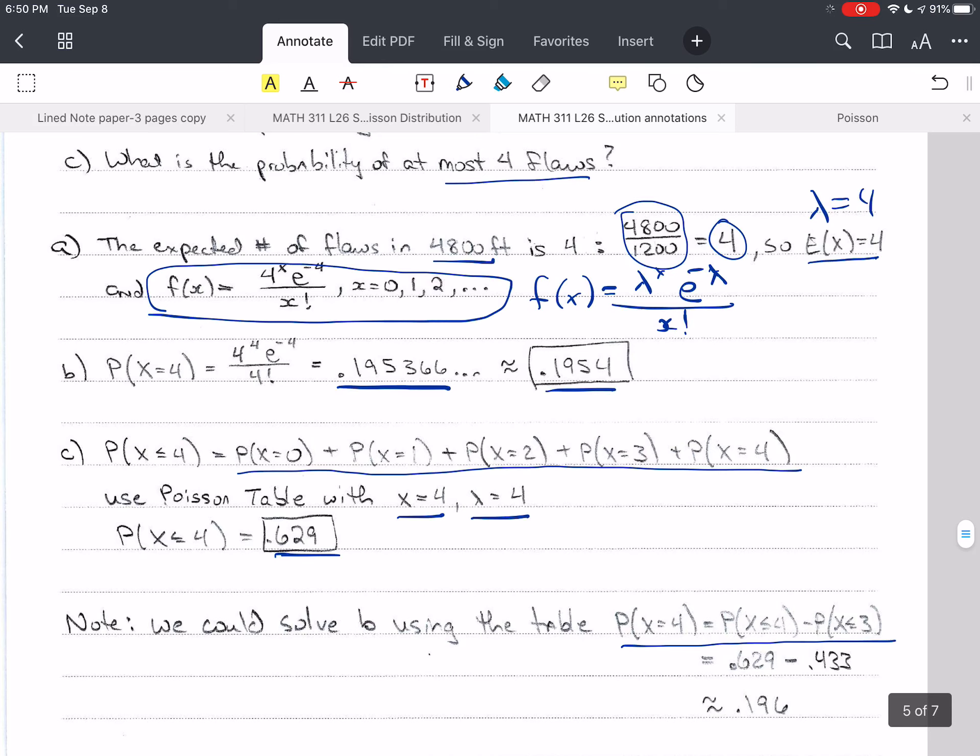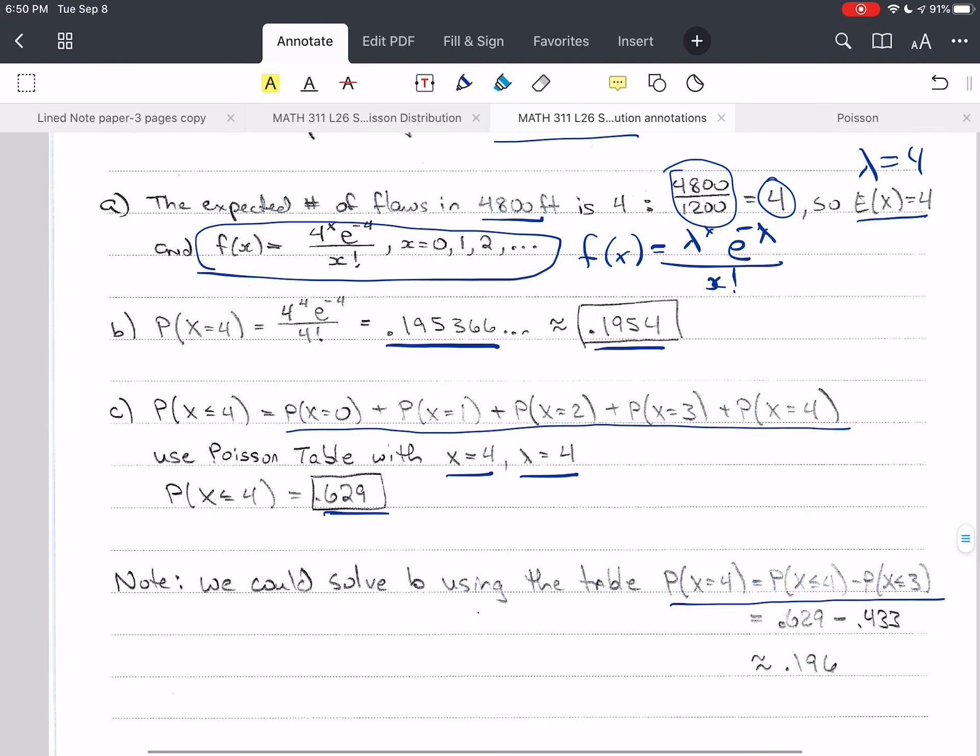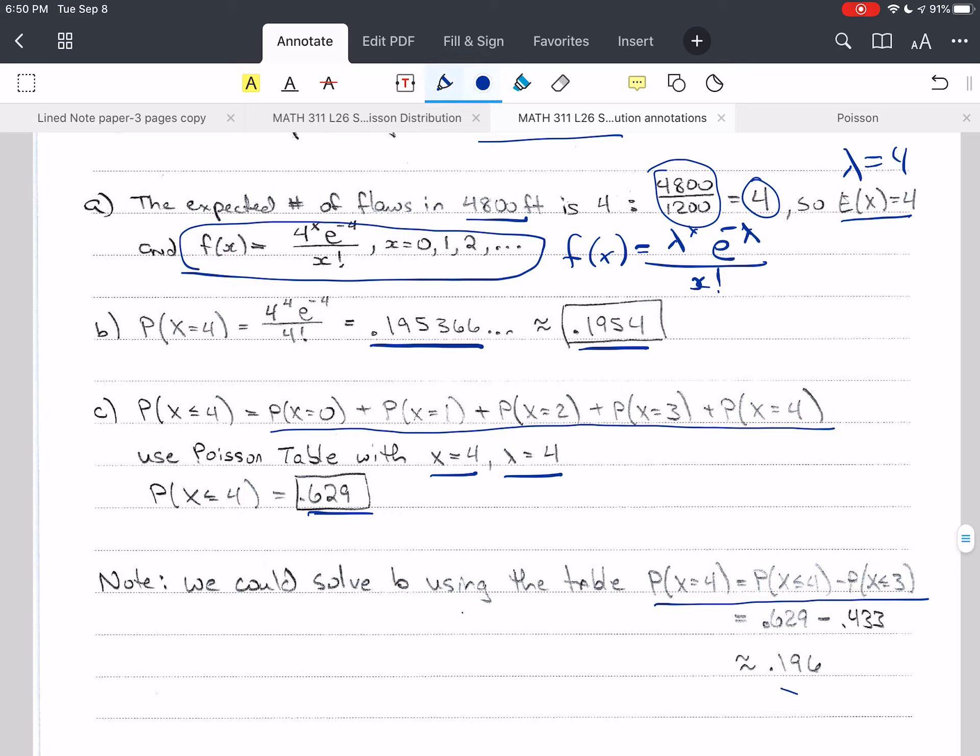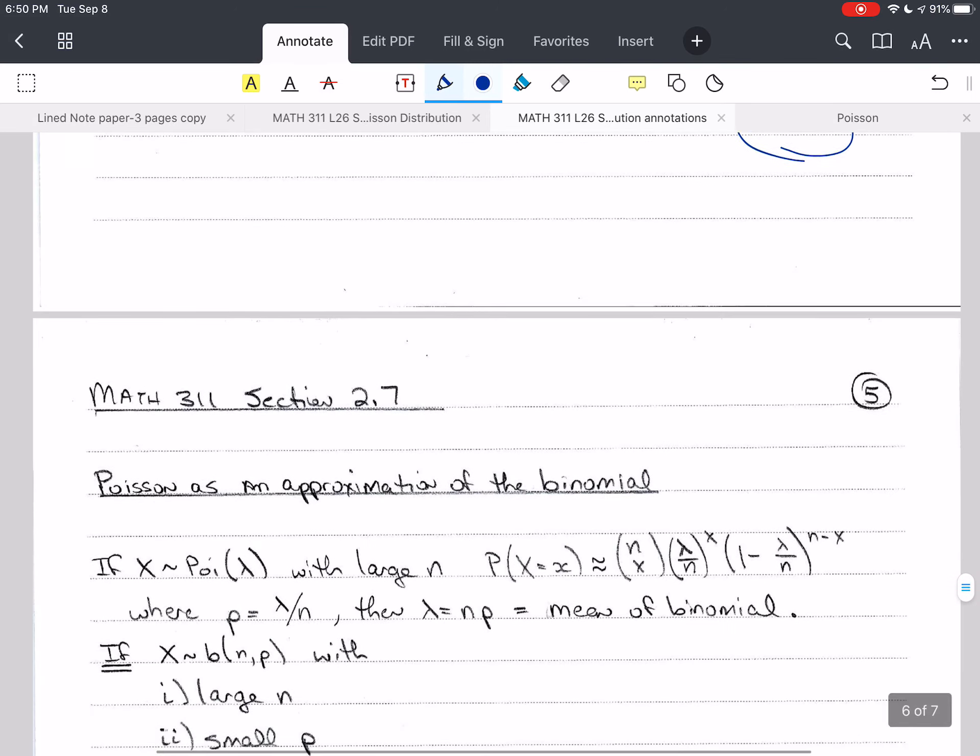And then we get 0.196, which is fairly close to 0.1954. You see, there is a little bit of difference. But if you're going to use the Poisson table, then write down that you've used the Poisson table. That's where you're getting your information from, so I'll know.